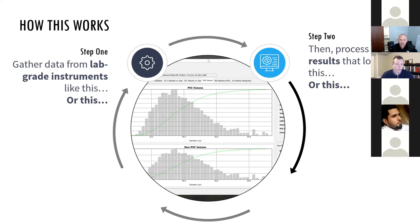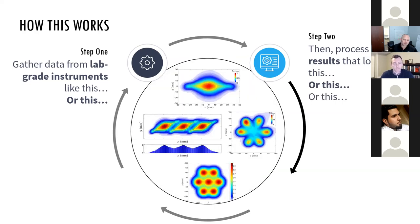This is a more typical drop size distribution — some people call the green lines here an S-curve. It shows what volume of droplets contains the primary volume of the spray. At the 50 line across the middle is where 50% of the spray volume is contained at that size droplet and smaller. So if you're worried about where your material is going, looking at it in a volume sense is what you want to do here.